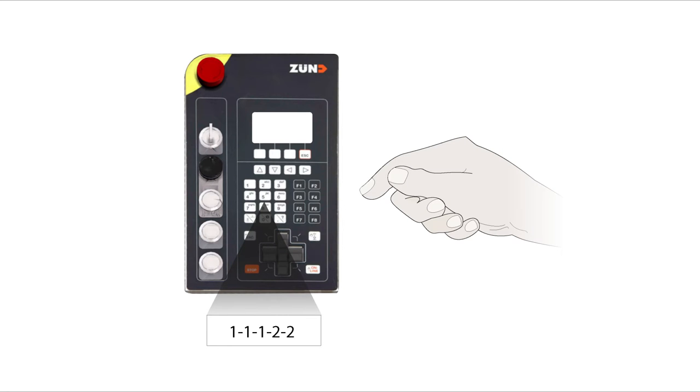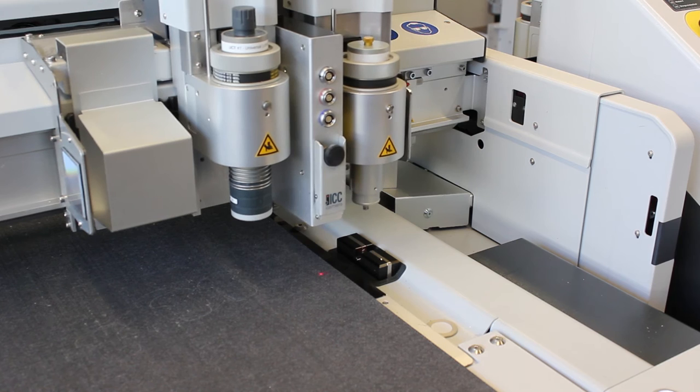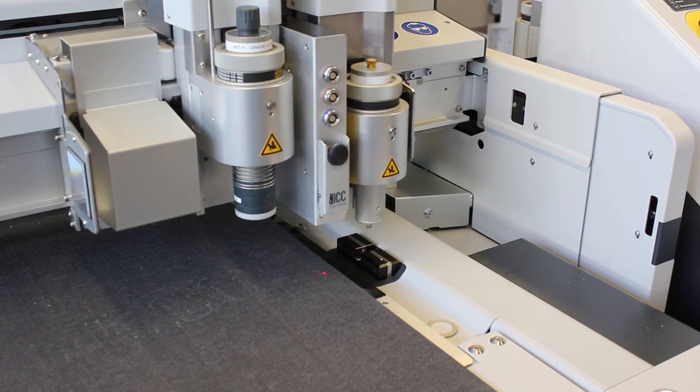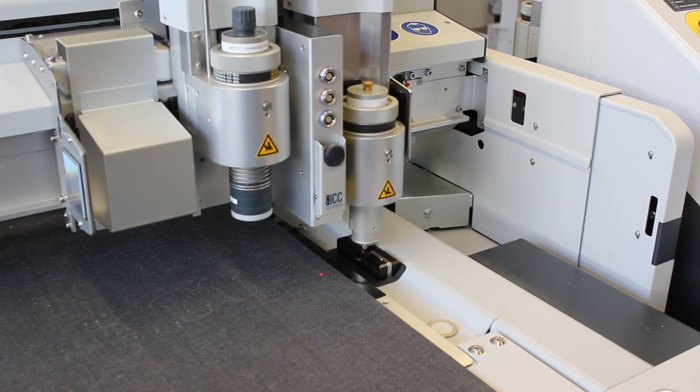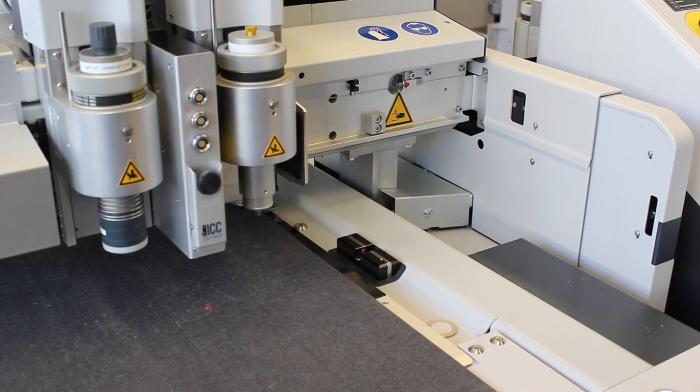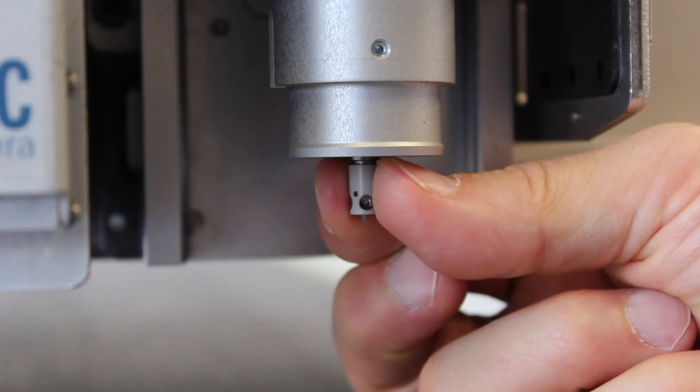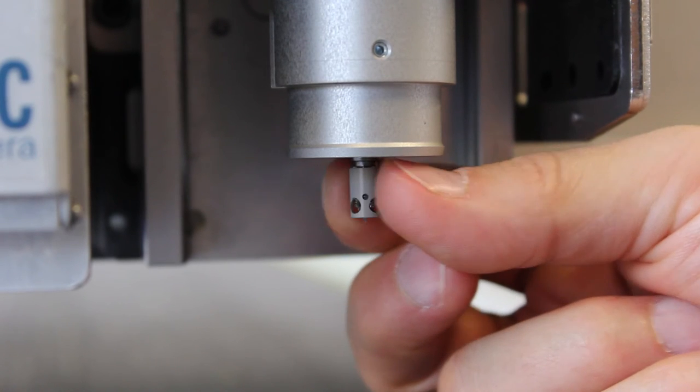From the cutter, start initializing the tool. Once the tool is initialized, unscrew the glide shoe until the desired cutting depth is attained.